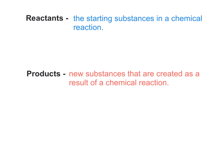At the bottom of your notes page, we have the vocabulary words reactants and products. Reactants are the starting substances in a chemical reaction — so that's going to be my match and my candle wick in that example with the candles. Products are defined as the new substance created as a result of a chemical reaction. So when I use that match to light that candle, the product would be the carbon dioxide and the water vapor created — both gases. Please copy these into your notes by hitting pause.